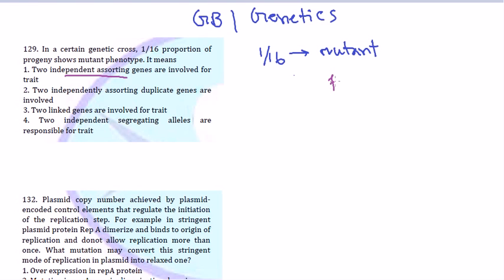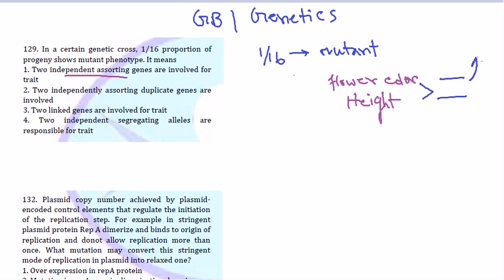The law of independent assortment tells us that if you cross two individuals using two different characteristics — for example, flower color and height of the plant — the genes for flower color and the gene for height will segregate independently during cell division. The presence of the flower color gene will not affect the height gene and vice versa. Those genes express separately, independently — that is called the independent assortment of genes.